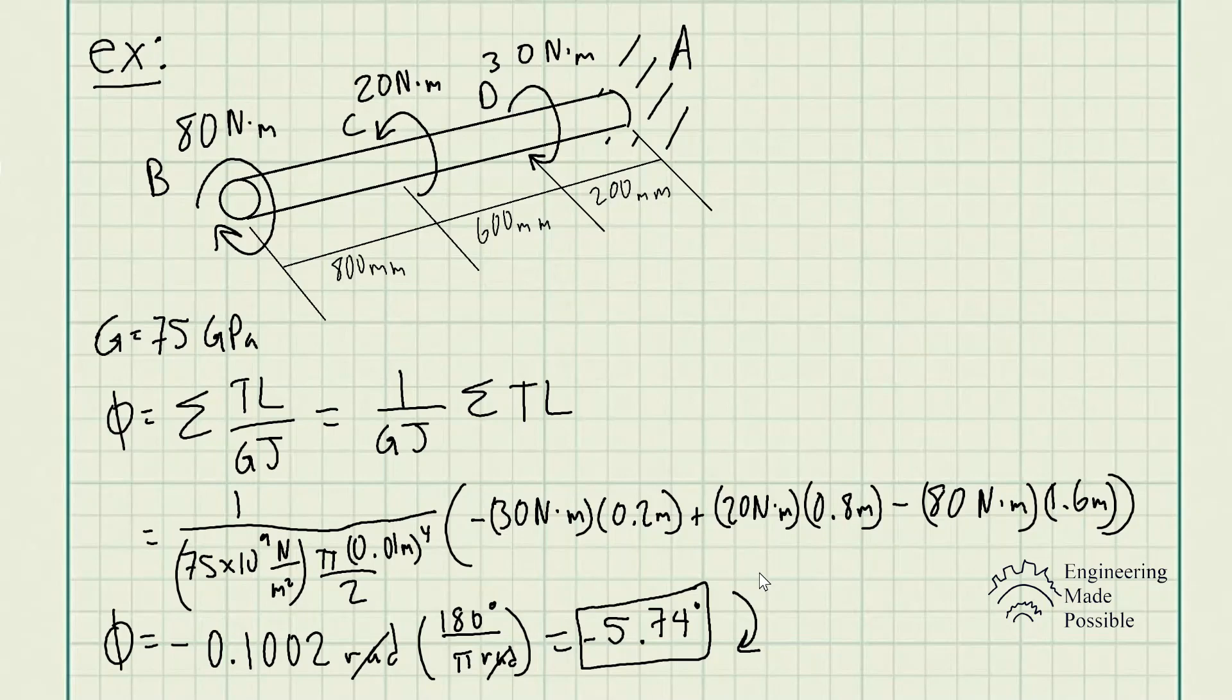And so this is how you solve the angle of twist when you're dealing with multiple torques being applied along a shaft. You have to sum each angle of twist with respect to each of the torques being applied at the specific locations along the shaft. Just keep in mind to ensure to use the same sign convention, whether clockwise, in this case we use negative, and counterclockwise as a positive direction. Just keep that in mind throughout your calculations.